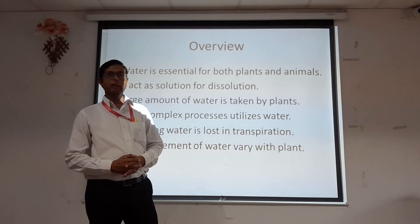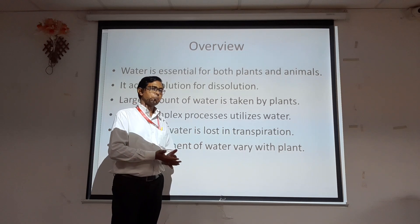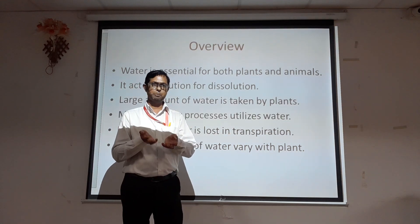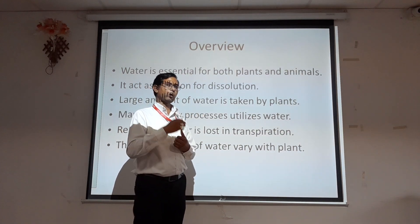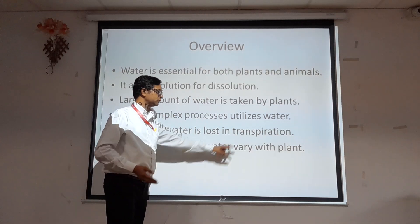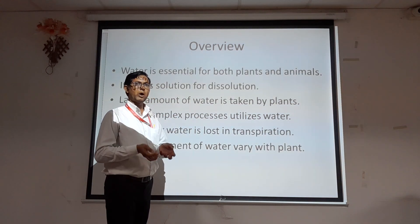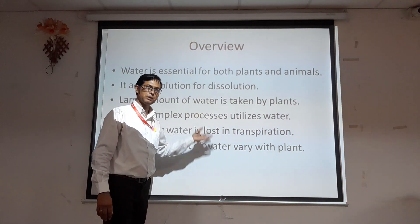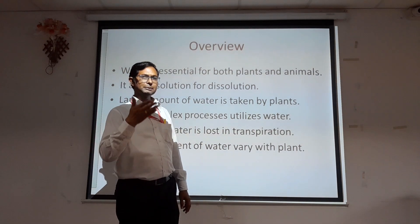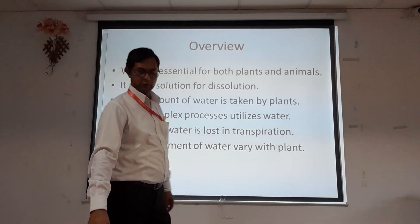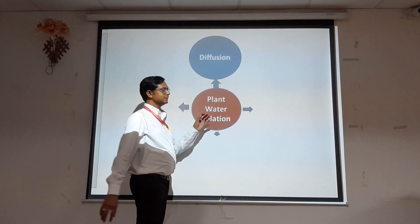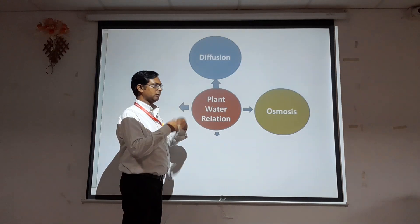Since water is most important and is utilized for different processes, it is necessary to consider the different aspects related to water. Water is absorbed by the roots, taken up by the leaves, stem, and different organs of the plant, and then given out through the process known as transpiration. How water gets absorbed, how it is utilized — all these things are discussed in the topic known as plant water relation.